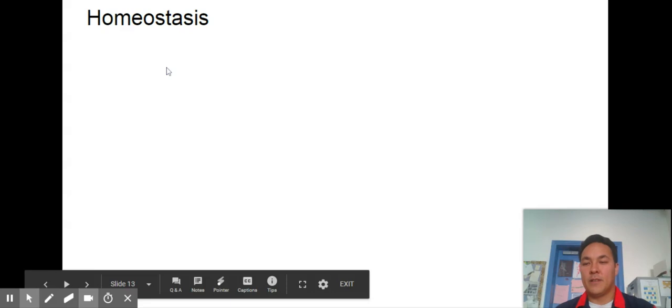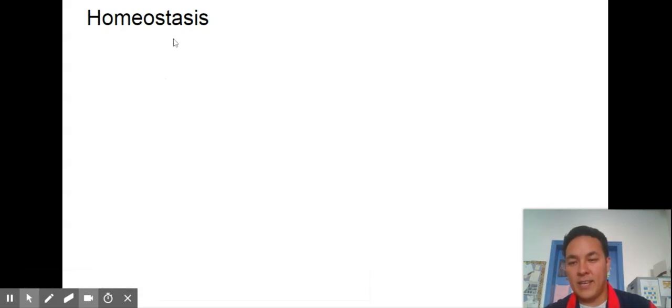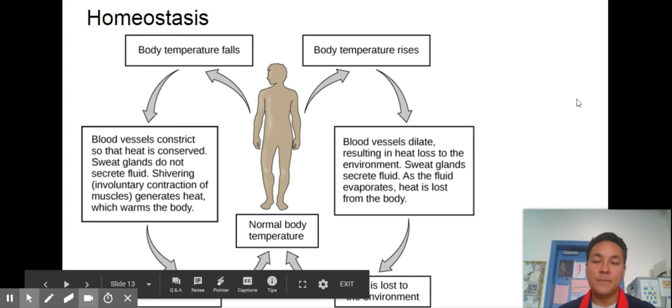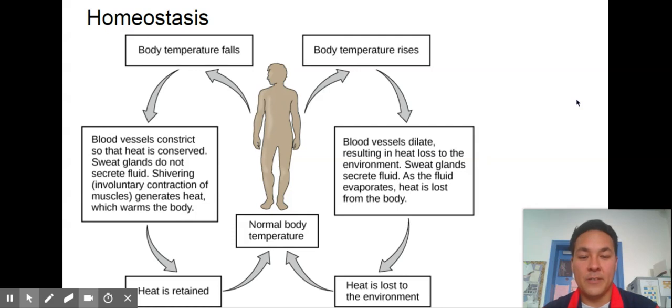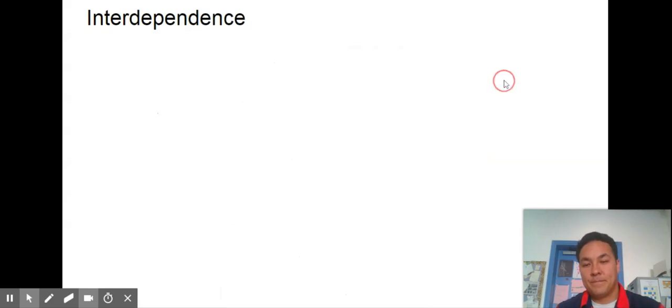Homeostasis. Homeo, similar to or keeping the same, and stasis standing still. Trying to keep something the same in our body, for example a similar body temperature. If we get too hot, we sweat so we can cool down. If we get too cold, we shiver so we can warm up. Can you give some other good examples of items we would need to regulate in our bodies? Hopefully you got something like glucose. Diabetics have problems with insulin levels. Maybe you got blood pH or calcium levels for building bones.